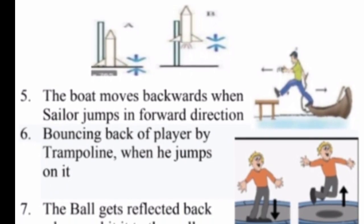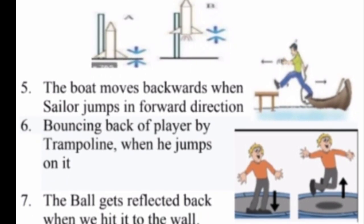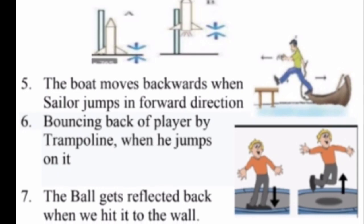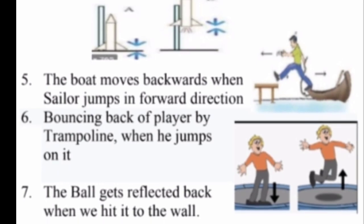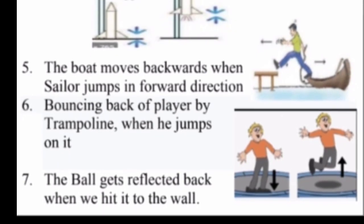The boat moves backward when the sailor jumps in the forward direction. The player bounces back from the trampoline when he jumps on it. The ball gets reflected back when we hit it against the wall.